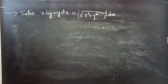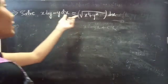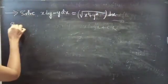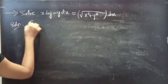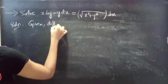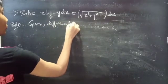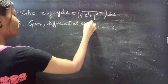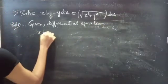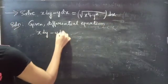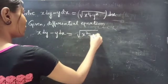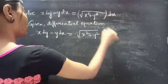Problem to solve: x dy minus y dx equals to square root of x square plus y square, into dx.